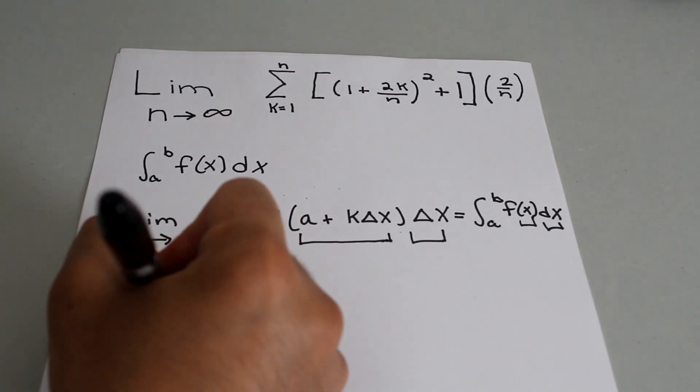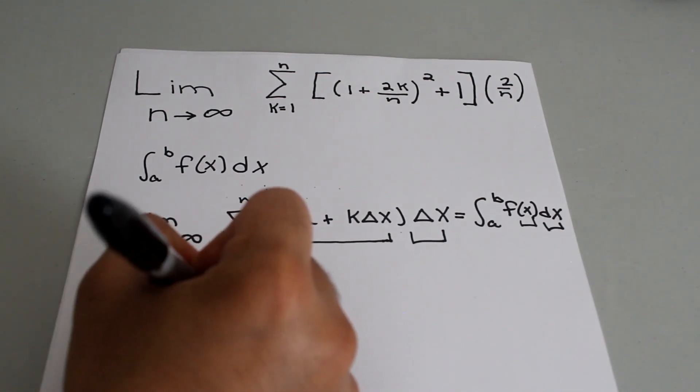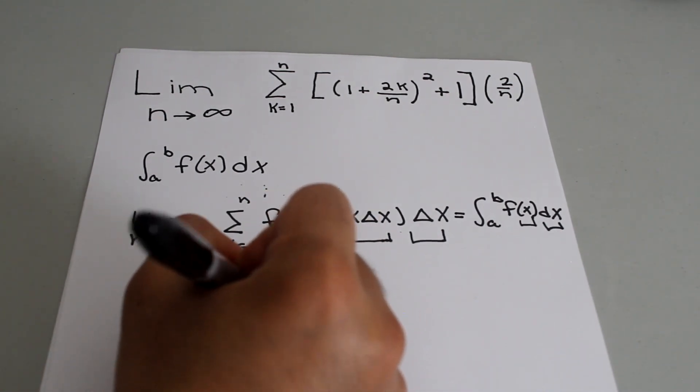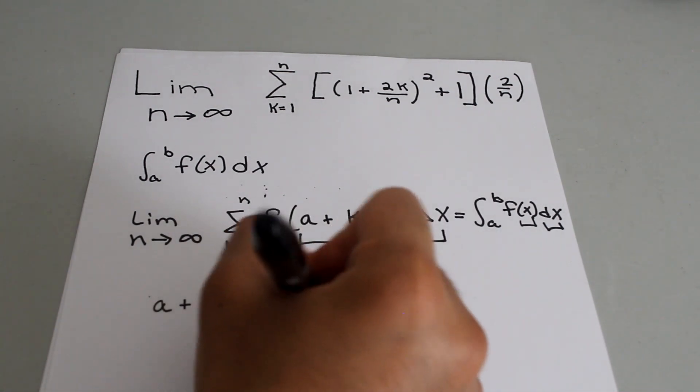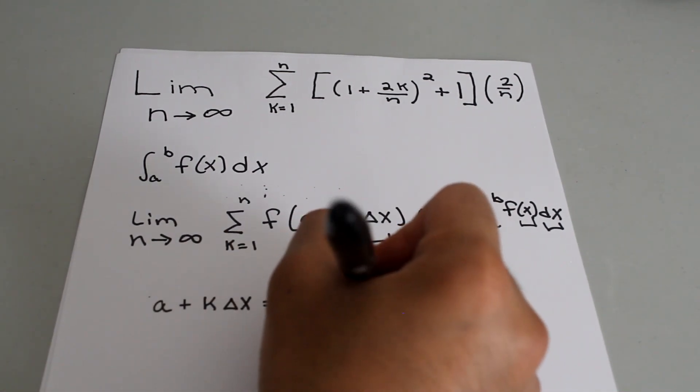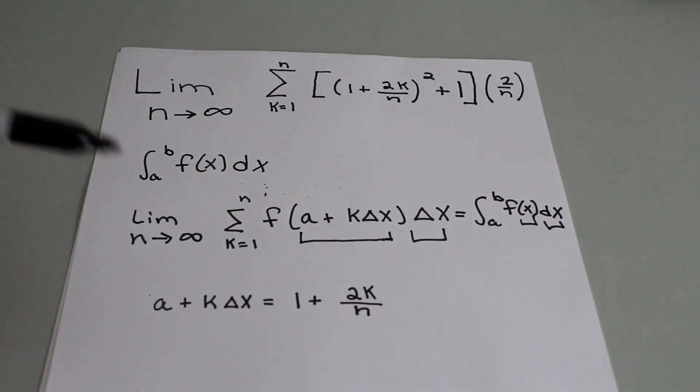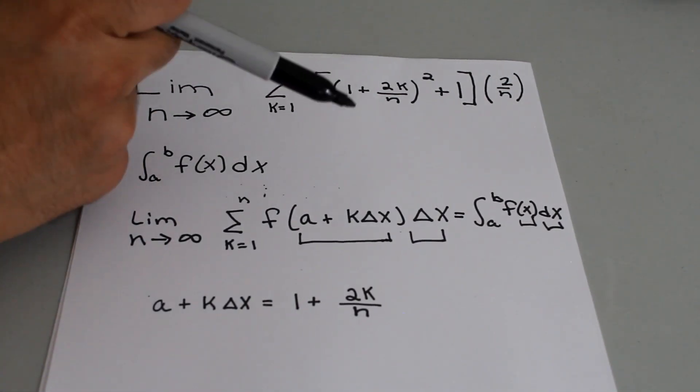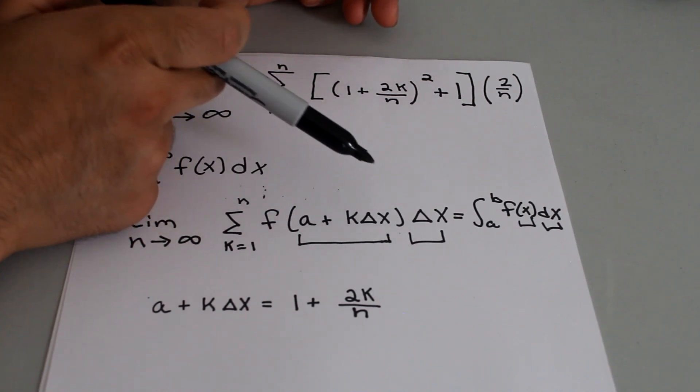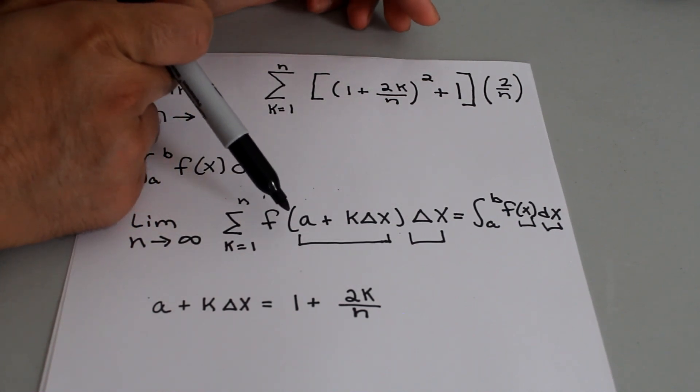So a plus k delta x equals 1 plus 2k over n. To make sure that we have the delta x, notice that delta x is being multiplied by this entire quantity of f.